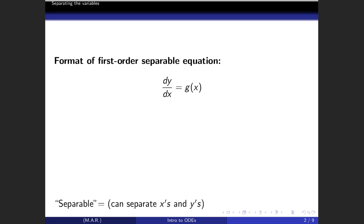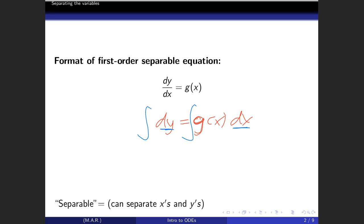This is actually something you've done already in calculus one, but we're going to do an extra step here. We put the dx to the other side, then integrate both sides — on the left side with respect to y, and on the right side with respect to x. That is what we mean by a separable equation.